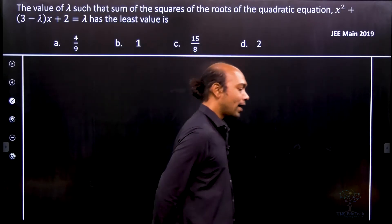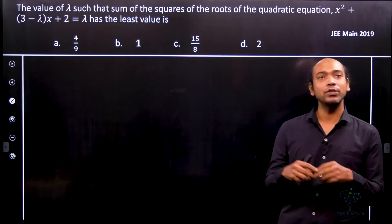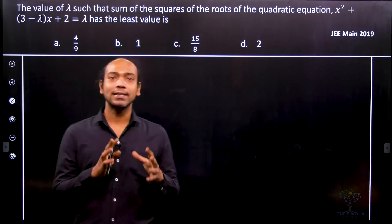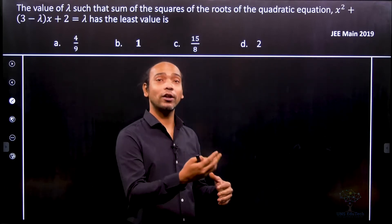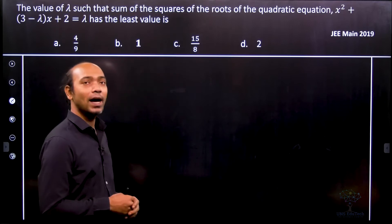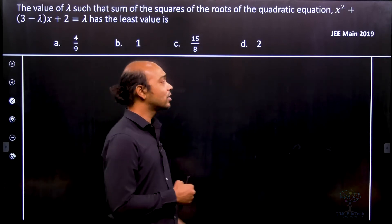In this problem we are required to find out the values of lambda in such a way that the sum of the squares of the roots is the least. So let's go ahead.